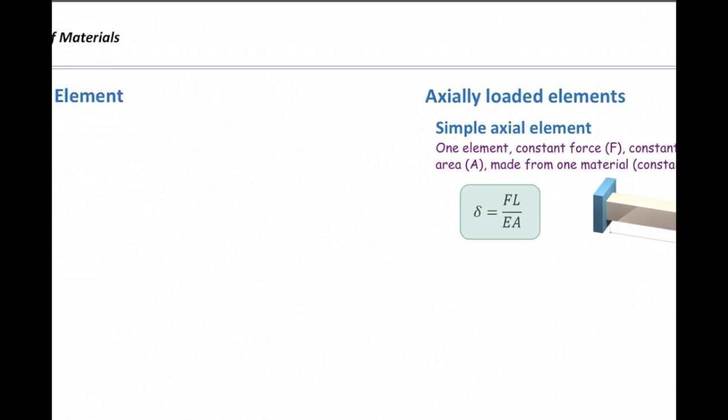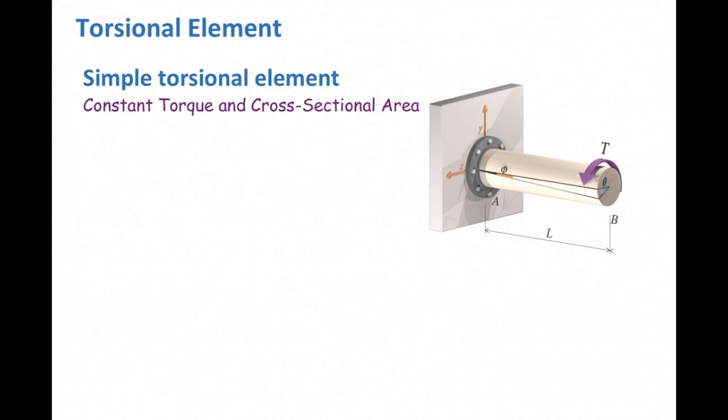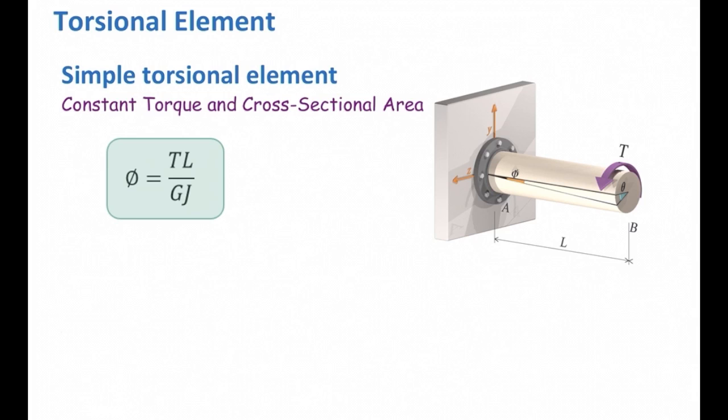Exactly similar to that, for a torsional element which has constant cross-sectional area and constant force, we have this equation. Phi is TL over GJ. T is torque, L is the length of the element, G is the shear modulus or modulus of rigidity, and J is the polar moment of inertia.